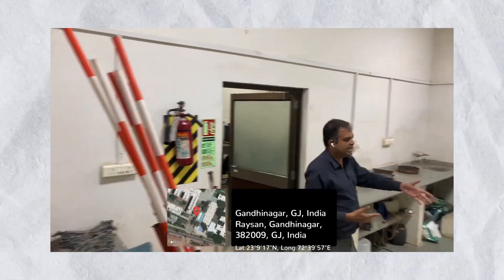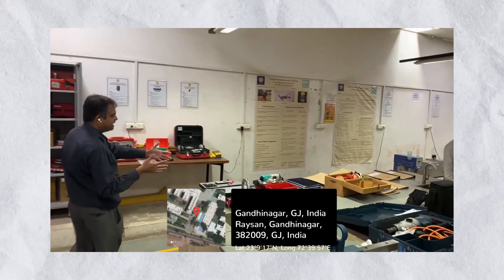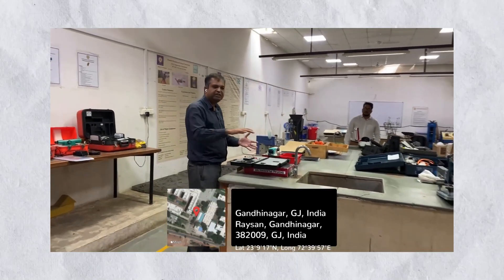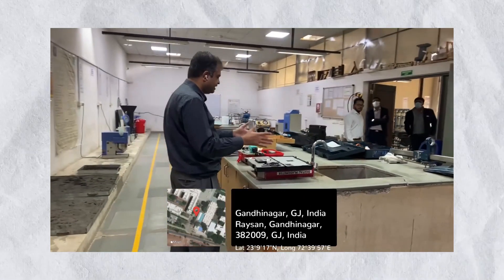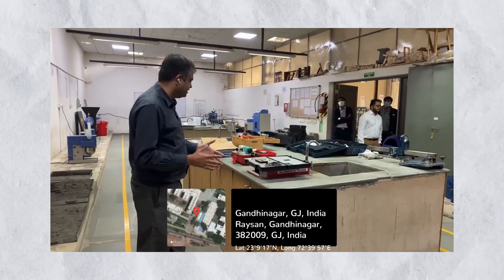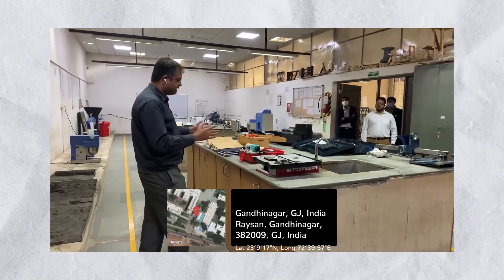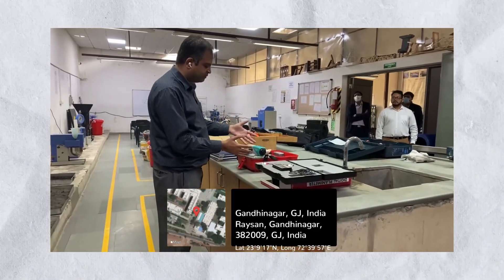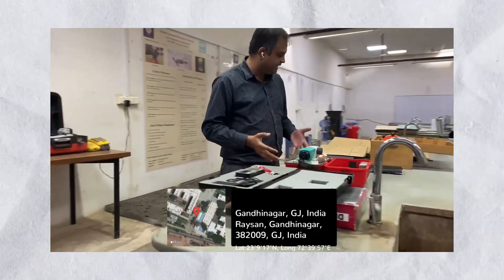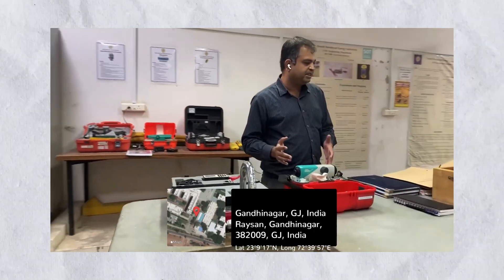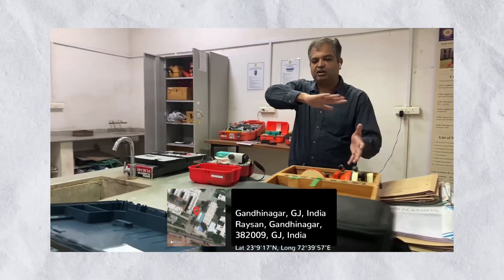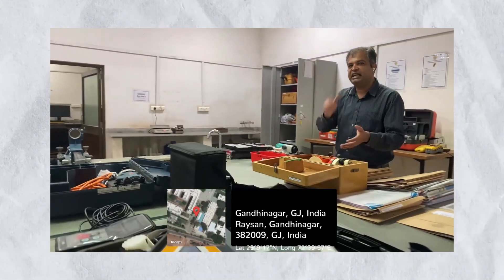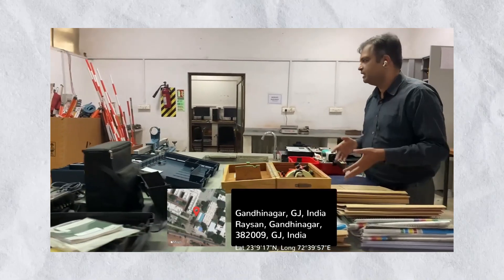We also have the digital planimeter, which is used for measurement of area. If you have an irregular area, with this planimeter one can find out the area of any terrain. There is also an auto level placed here, and a theodolite which is used for horizontal as well as vertical angle measurements.